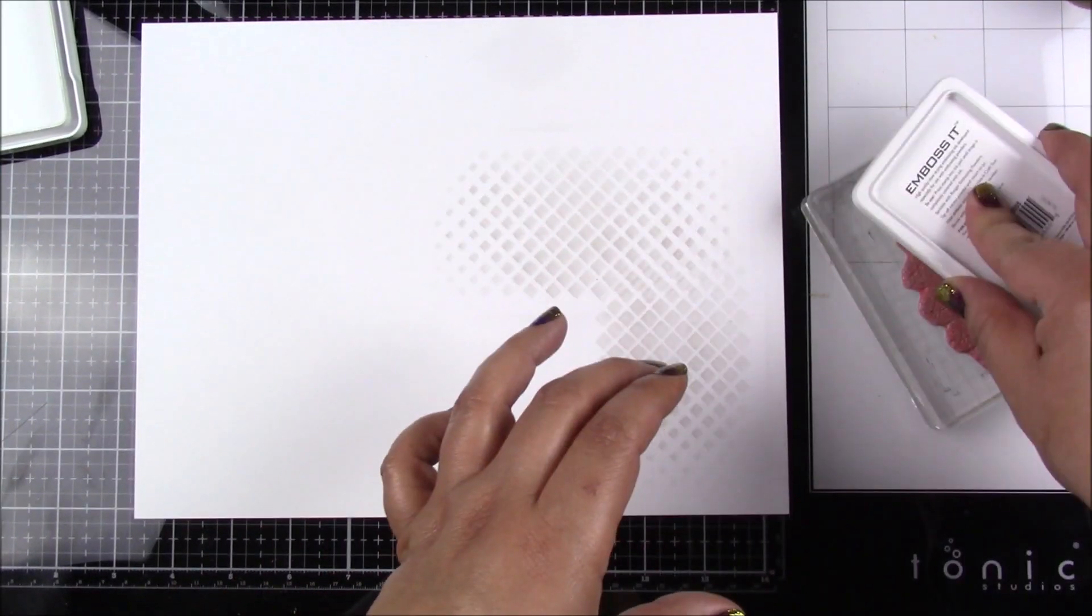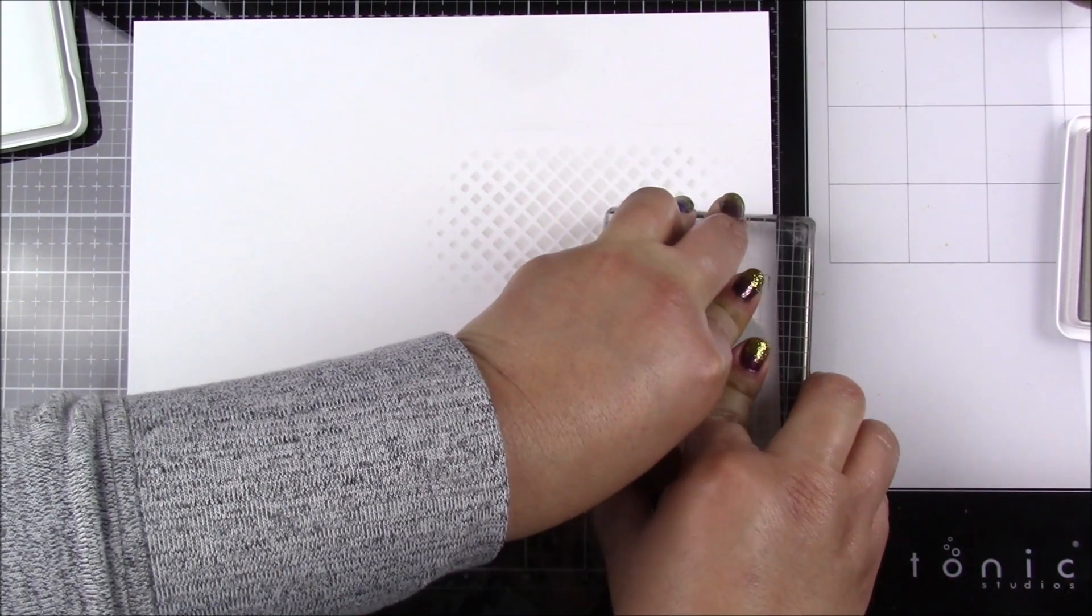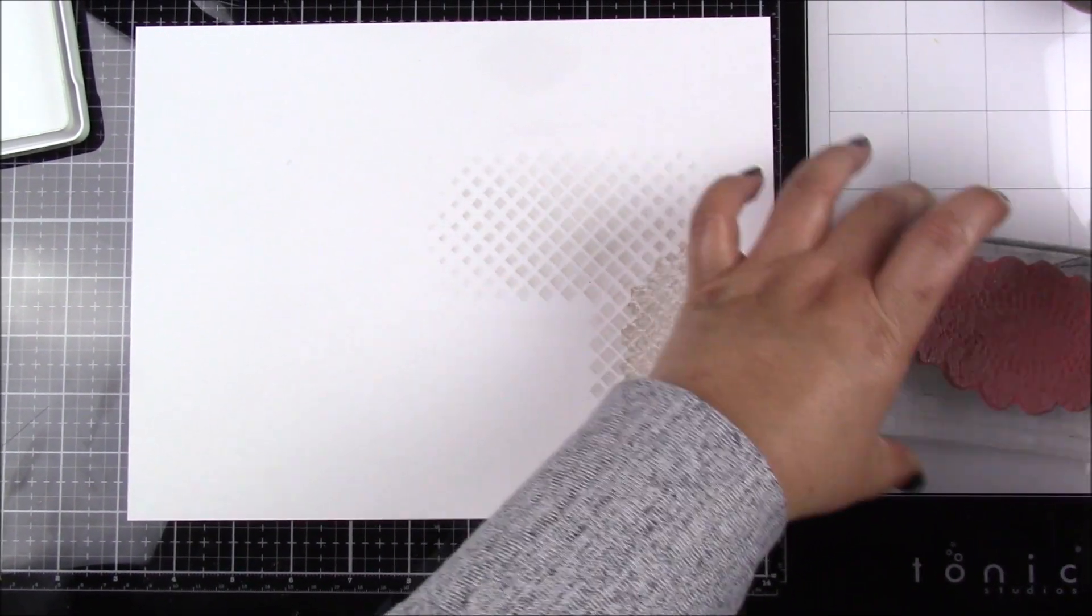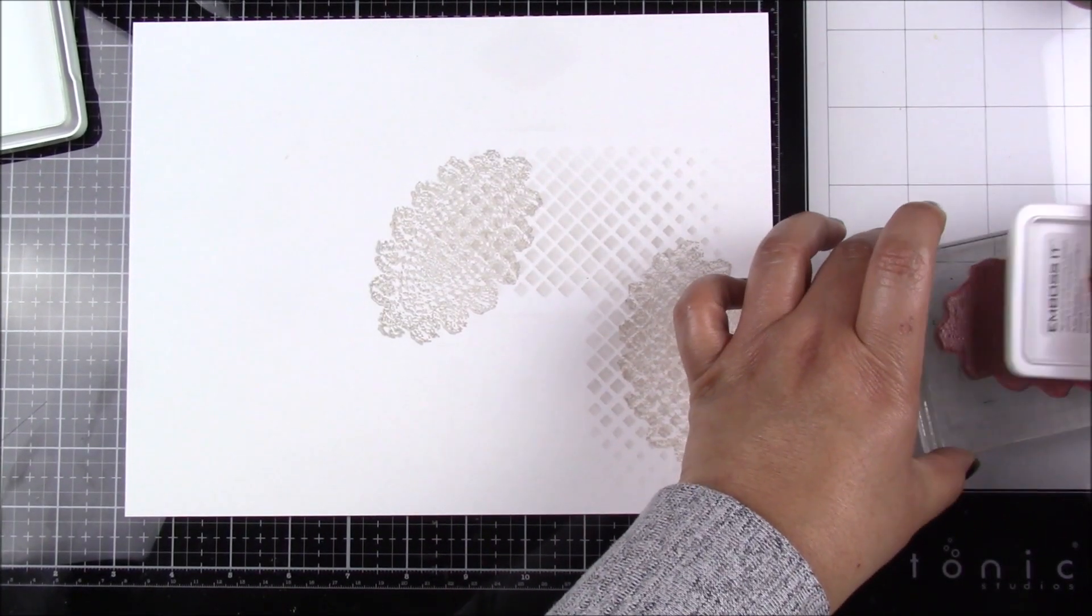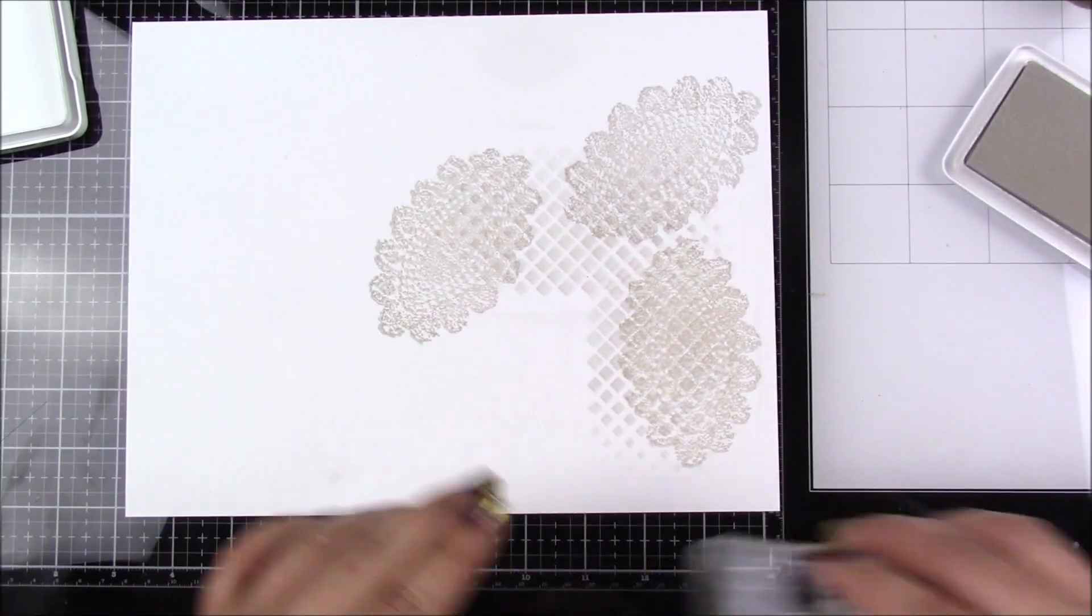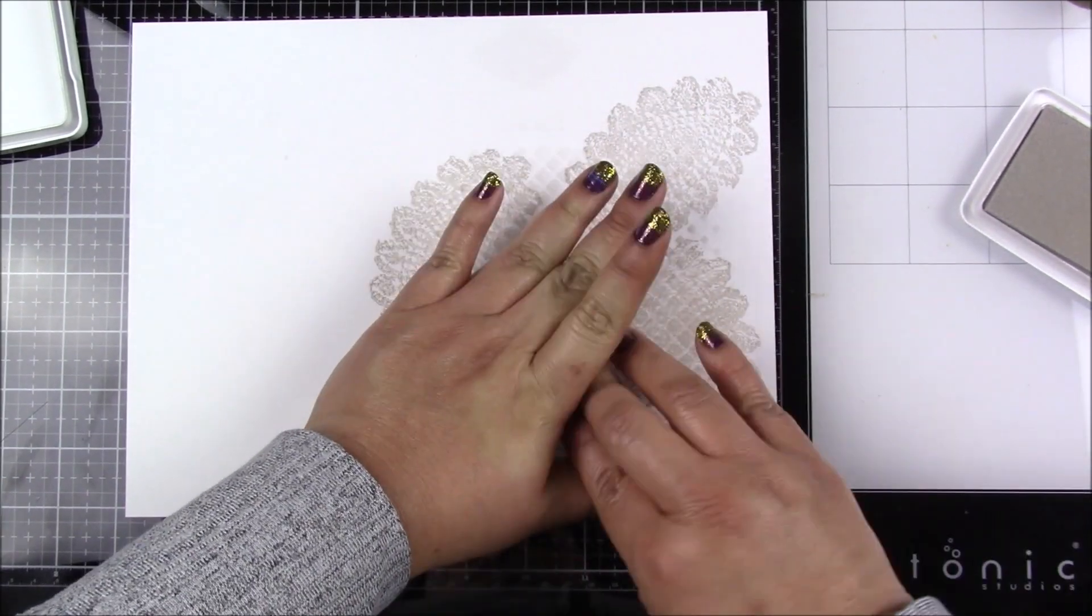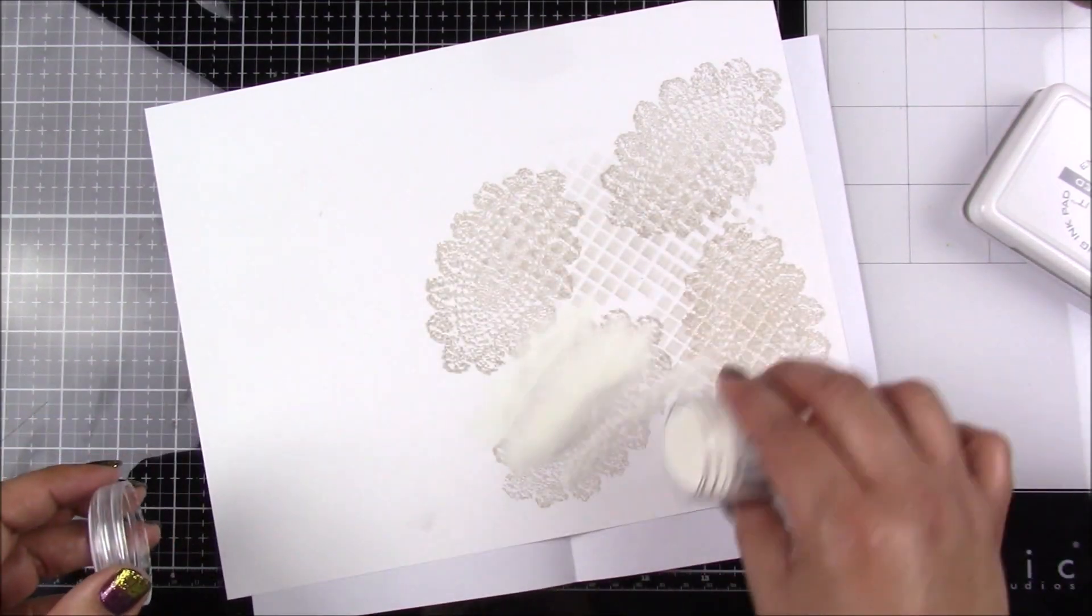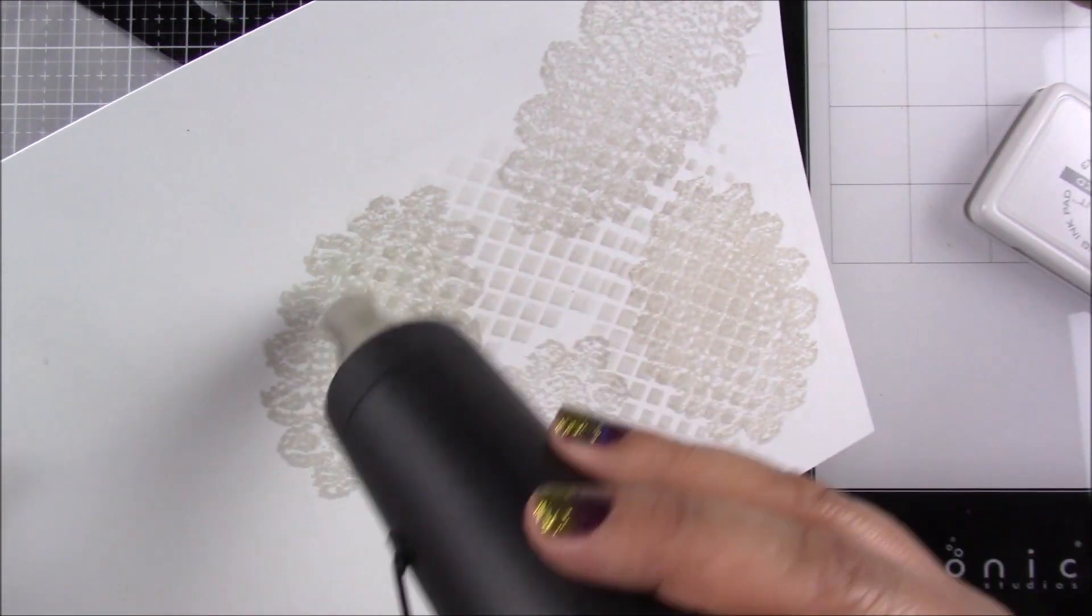Next I use Ranger's gray tinted embossing ink. When you're working with embossing ink you have to work rather quickly since you want it to stay wet for when you put the embossing powder on. So here I just do some random stamping. In my head I'm already thinking that towards the middle I will put my image, so I'm kind of leaving a little bit of space in between the images.